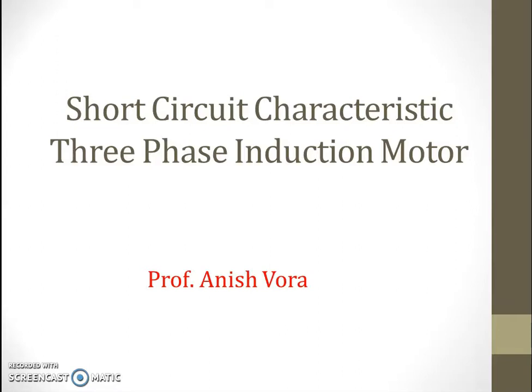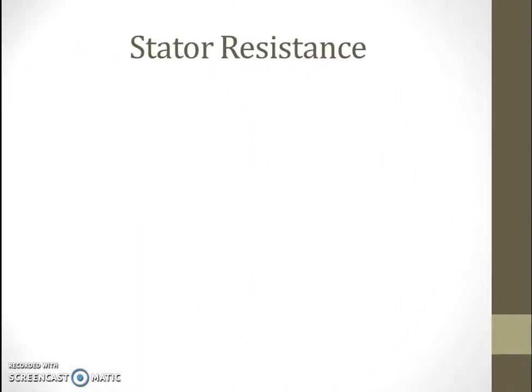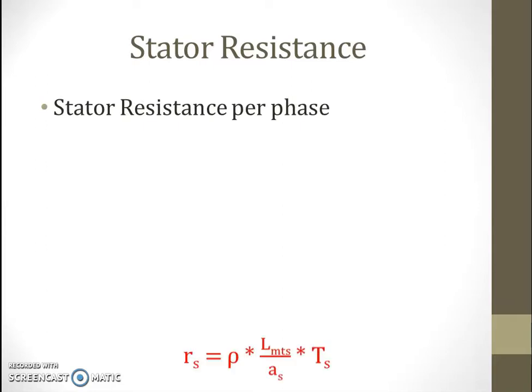We start with winding resistance — stator resistance. In case of three-phase induction motor, whether it is a wound type or squirrel cage type, stator resistance remains common because stator construction is common. Stator resistance per phase is given by rho multiplied by L (length of the mean turn) divided by cross sectional area, and multiplied by Ts that is stator turns.